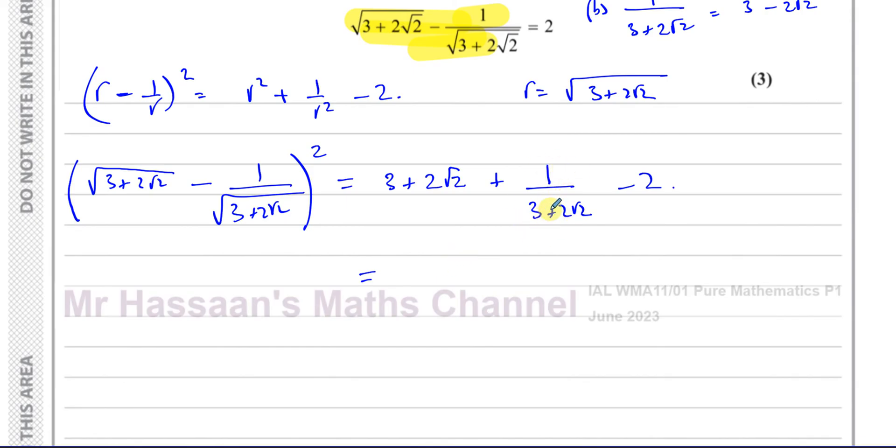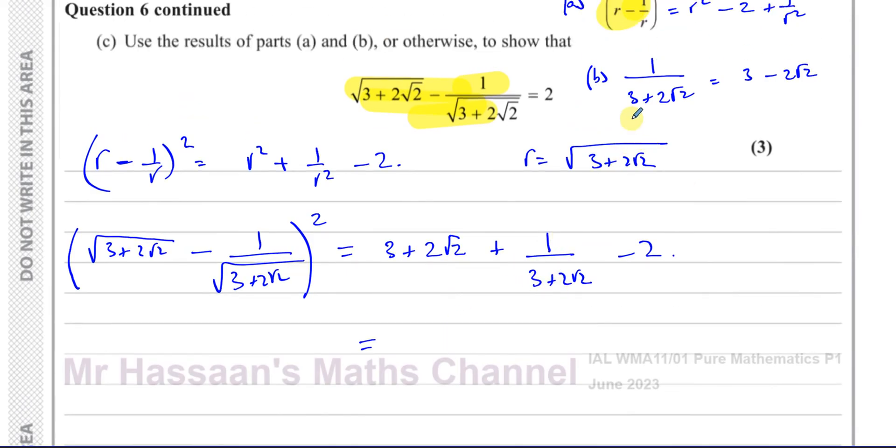if I use the result from part B, this part here, I know that this is the same as 3 minus 2 root 2. So I've got 3 plus 2 root 2, and this is plus 3 minus 2 root 2. At the end, I've got minus 2. So you notice that this and this are the same, so I can replace it with 3 minus 2 root 2. And now I can continue.